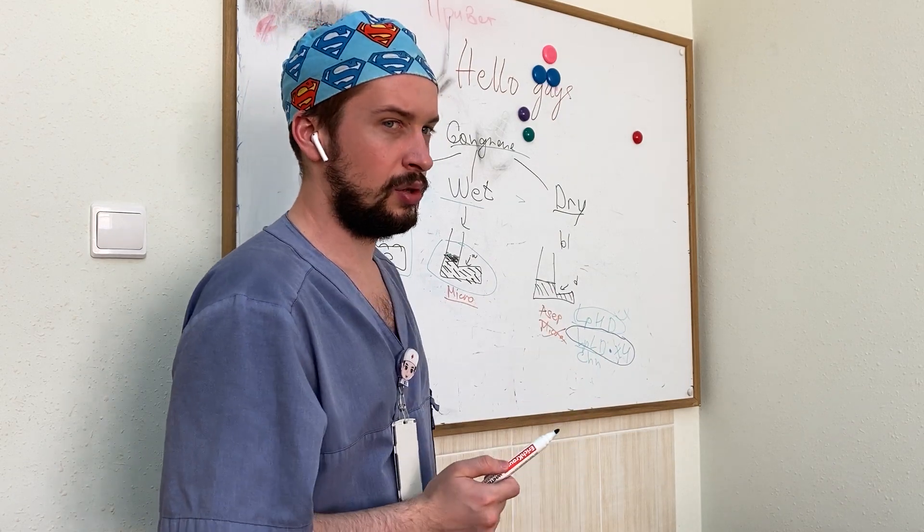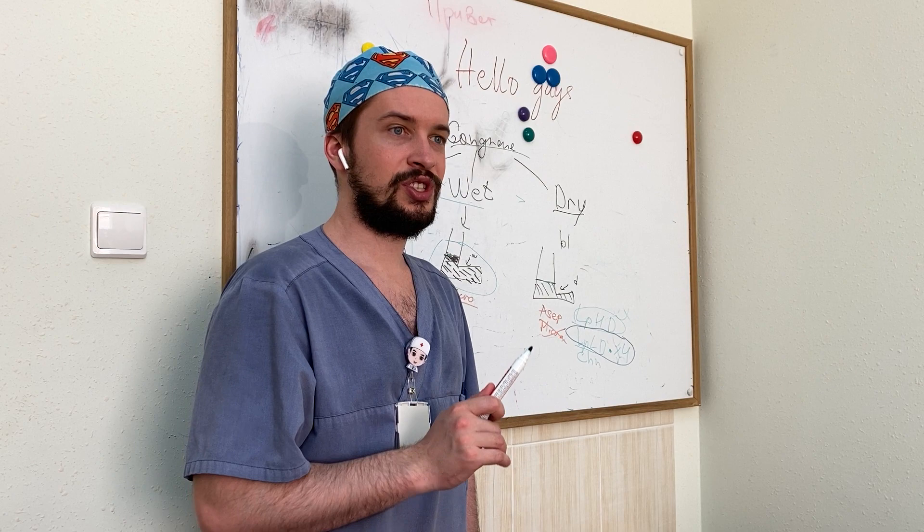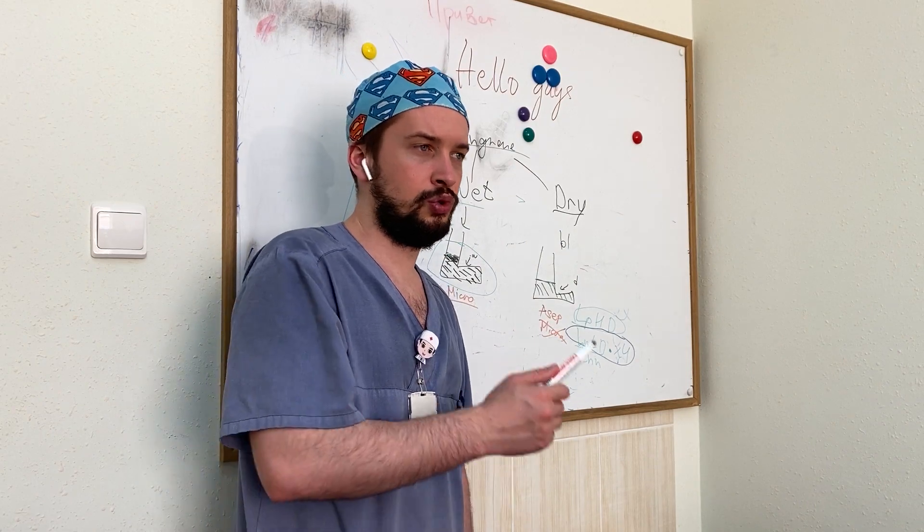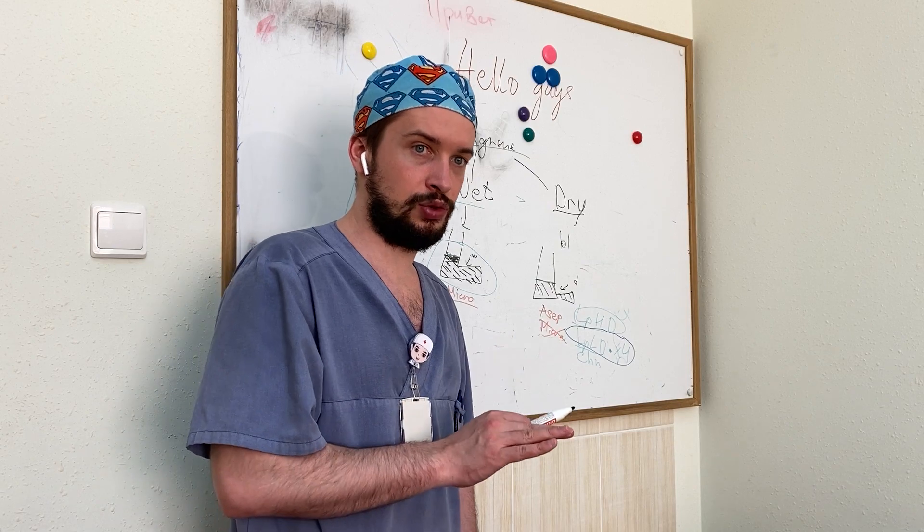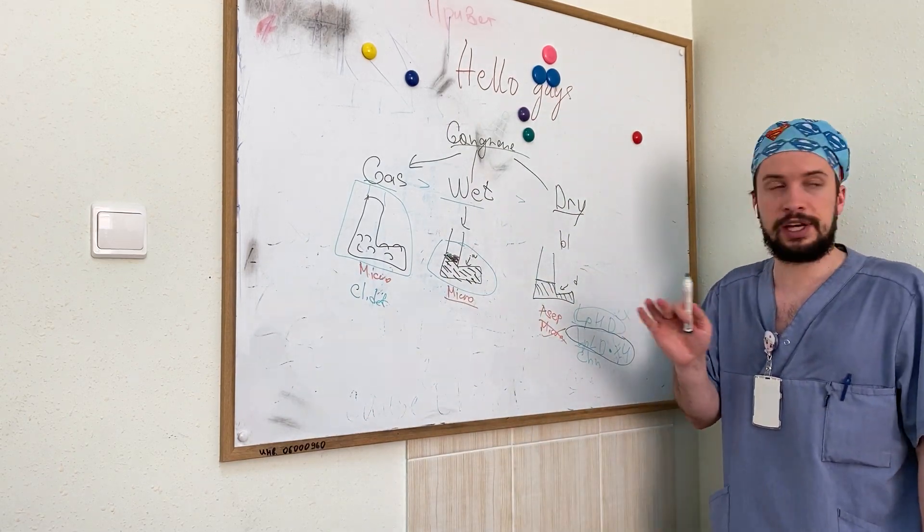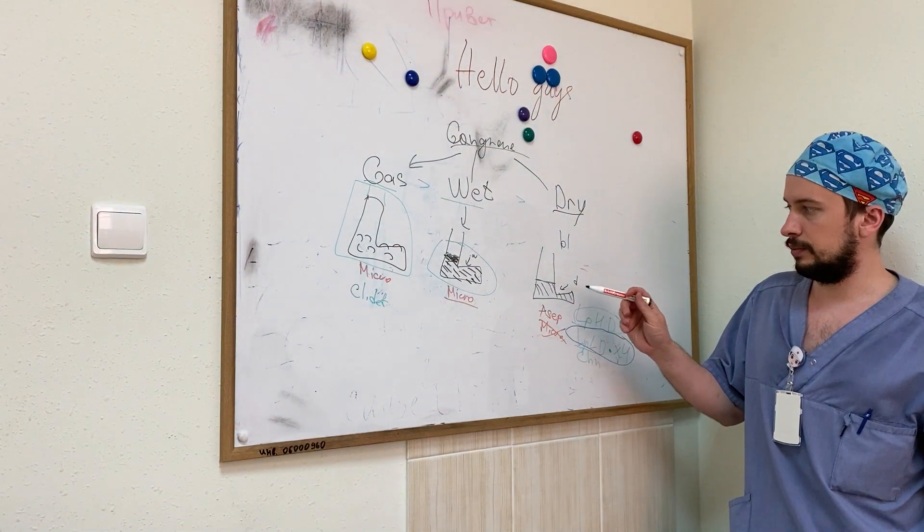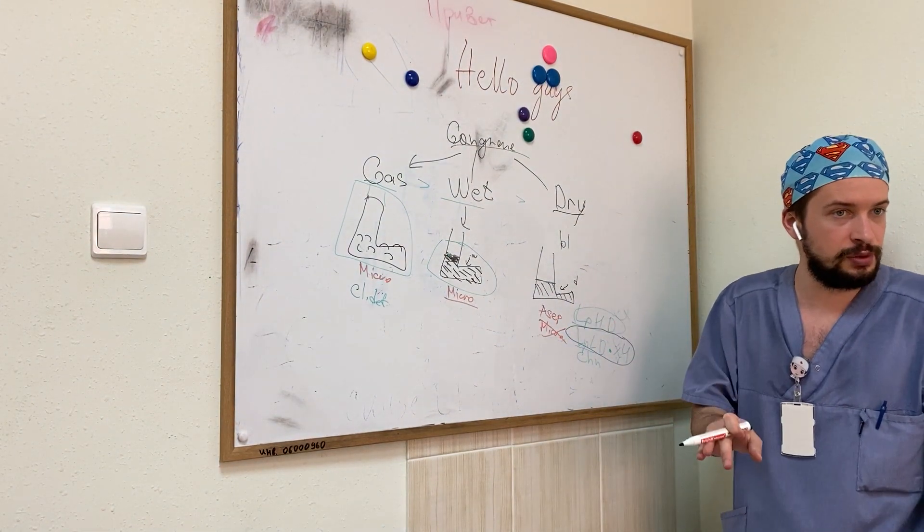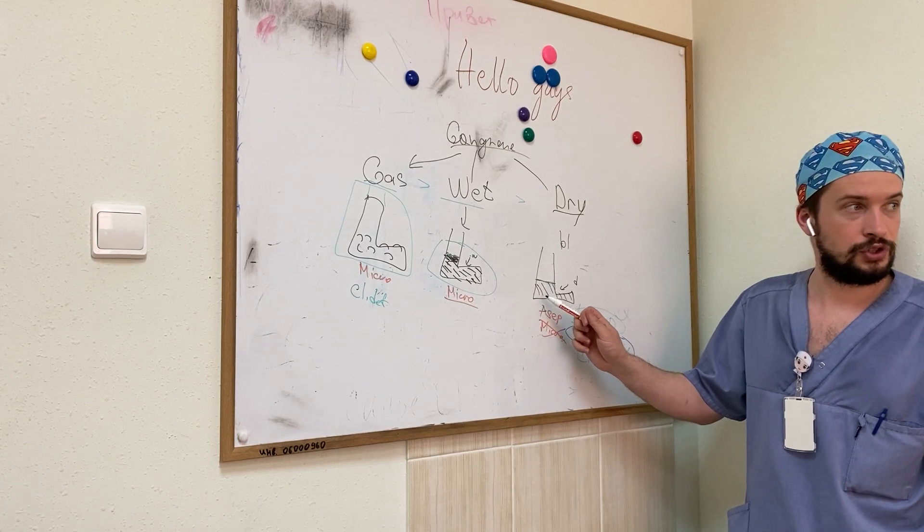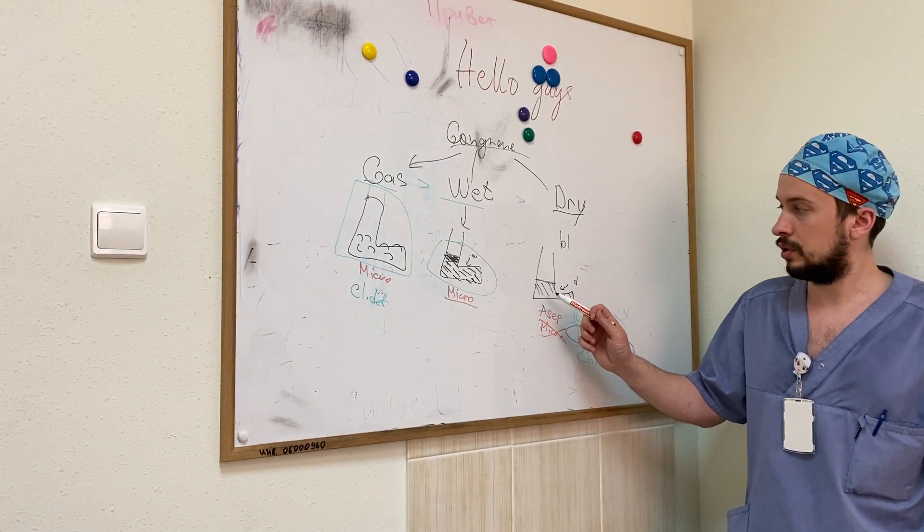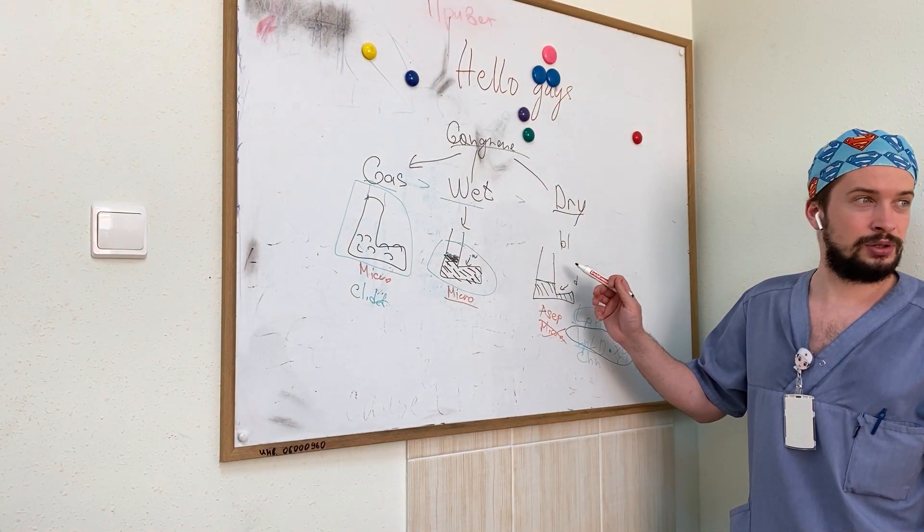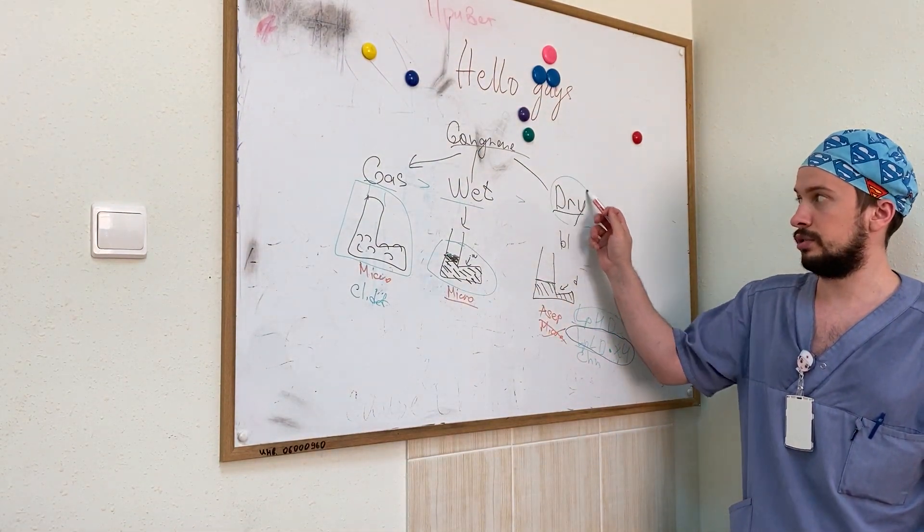And if we see dry, we can try to save a leg. Try, just try. I don't say that we will do it. But sometimes we can do it. Not always. For example, we see some black necrosis, and we cannot understand if it is deep or non-deep. We do a necrectomy and see live tissues. That means we will save this leg. That means that you don't need to be quickly with dry gangrene.